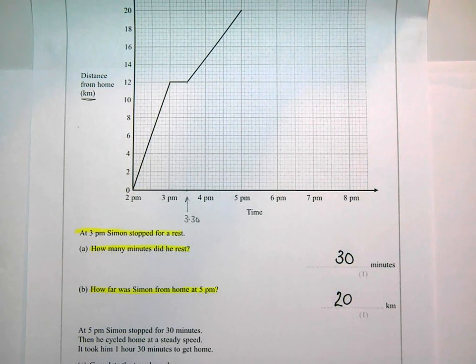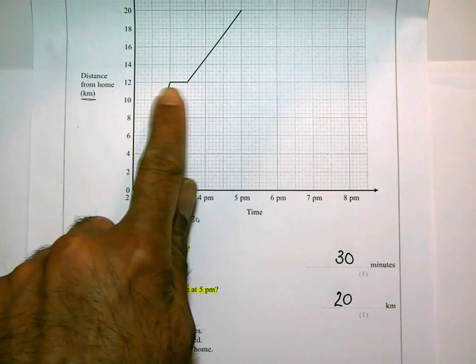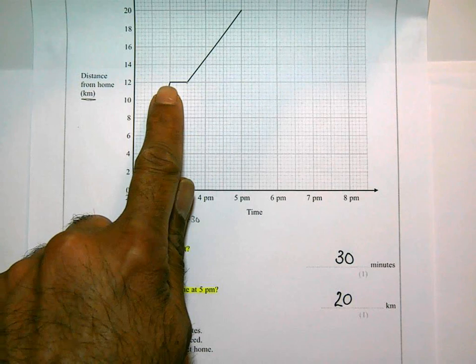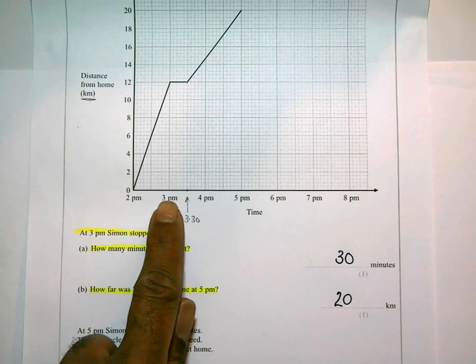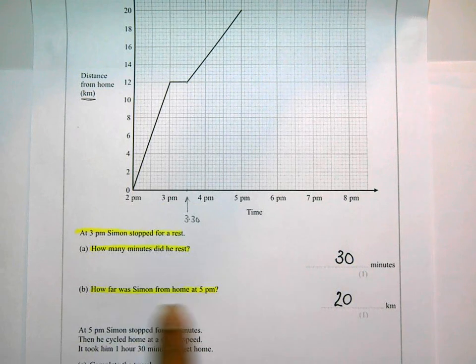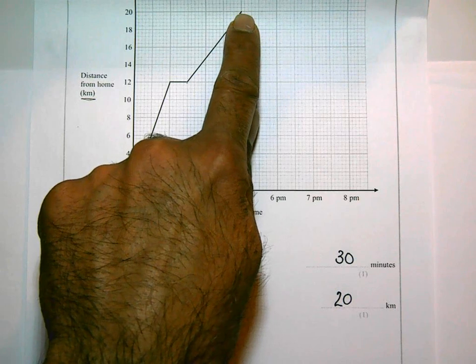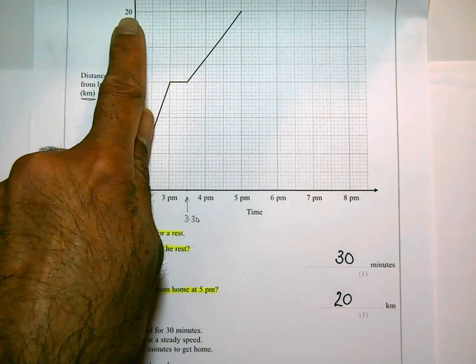Okay, so pretty straightforward. The question so far, how many minutes did he rest? We know he was resting because it was flat. And that there represents the time from 3 to 3:30. So he stopped for 30 minutes. How far was he from home at 5 p.m.? Look for 5 p.m. all the way to the graph and across to 20, 20 kilometers.